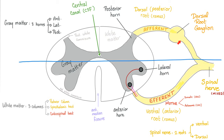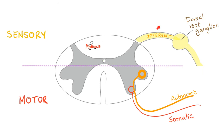What is this? A dorsal root ganglion. What's the definition of a ganglion? A collection of somas outside the CNS — in other words, a collection of somas in the peripheral nervous system. Is this peripheral? Yes, because it's outside the spinal cord. Spinal cord is central; anything outside of it is peripheral. So this posterior ramus is sensory because it's behind the line.